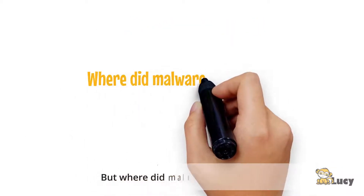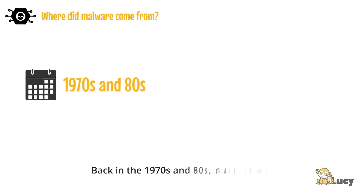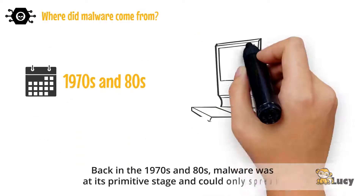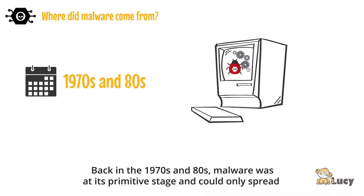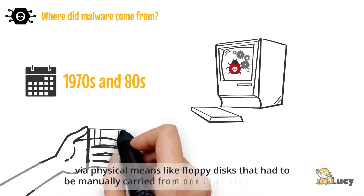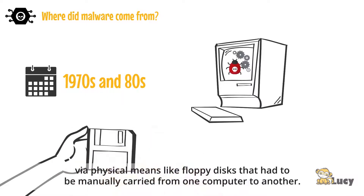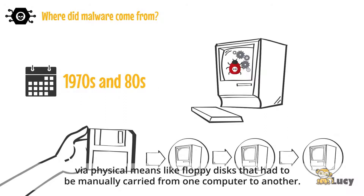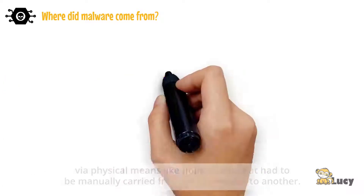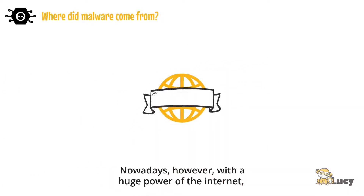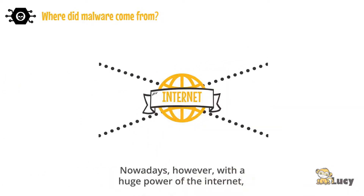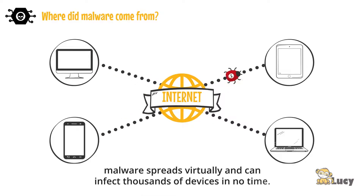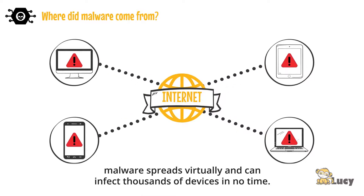But where did malware come from? Back in the 1970s and 80s, malware was at its primitive stage and could only spread via physical means, like floppy disks that had to be manually carried from one computer to another. Nowadays, however, with the huge power of the internet, malware spreads virtually and can infect thousands of devices in no time.